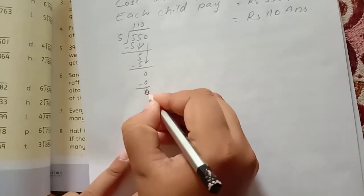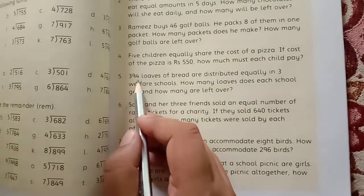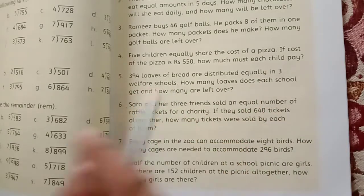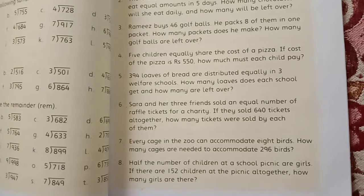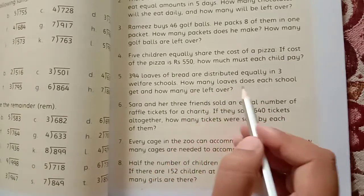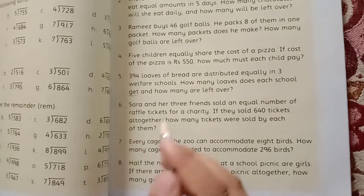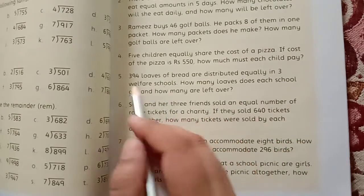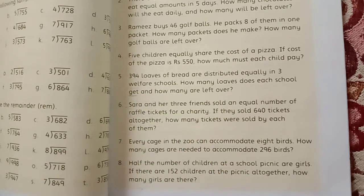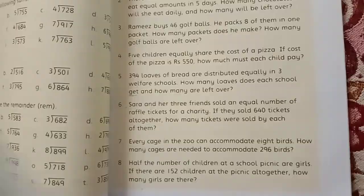Question number 5: 394 loaves of bread are distributed equally in three welfare schools. How many loaves does each school get? Three schools, and what happens? The remaining will be left over. Question number 5.